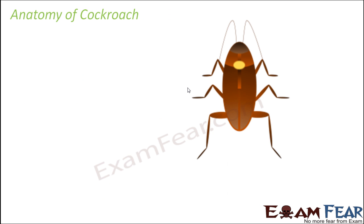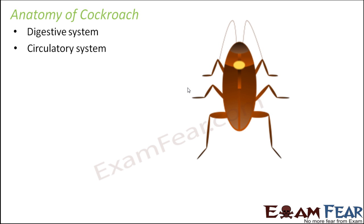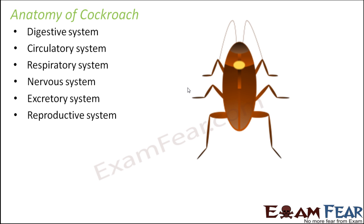With this we have discussed the morphology of cockroach. Now it is time to discuss anatomy, that is the internal structure. Anatomy covers all life processes taking place inside the body, like the digestive system, circulatory system, respiratory system, nervous system, excretory system, and reproductive system. We will go through each system one by one and compare how they are similar or dissimilar to the systems in earthworm, so that you can understand patterns across different organisms.